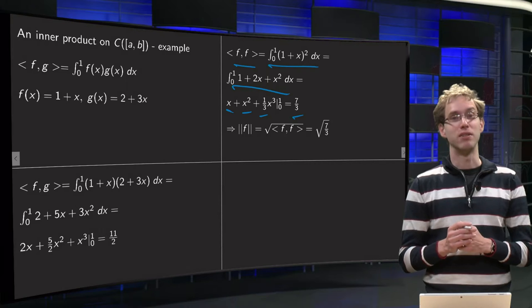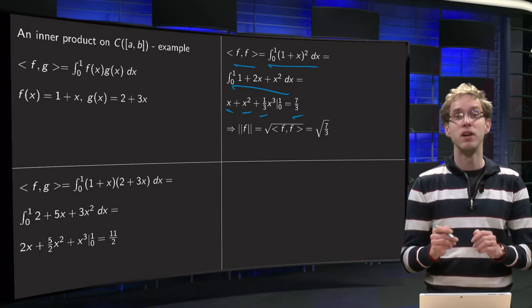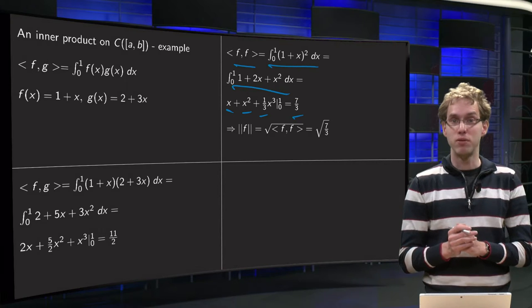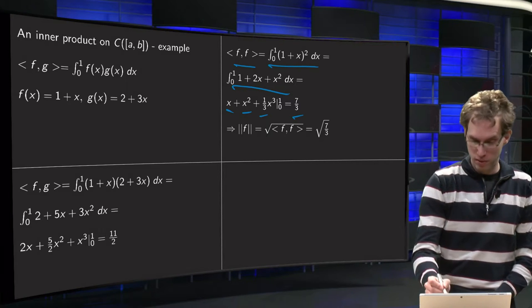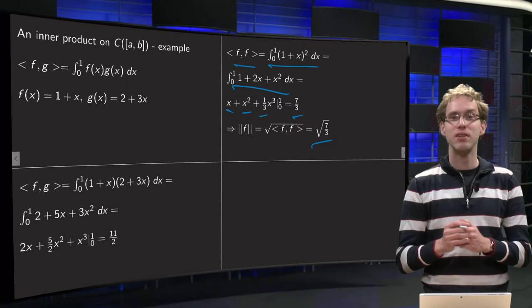So then we can define the length of f as the square root of the inner product of f with itself. Inner product of f with f equals 7 over 3, so the length of f equals the square root of that. And now we have the length of a function.